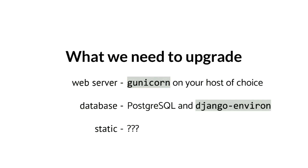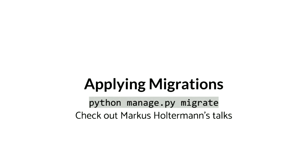So we're going to be using Postgres and Django Environ — that will help you with your database. When you apply migrations, like we did earlier, it's going to depend on a whole bunch of different things. I highly recommend Marcus Holtemann's talks and blogs about how to write migration files. You can automatically create migrations, but you may want to manually write migrations. You'll apply them with the migrate command we used earlier.